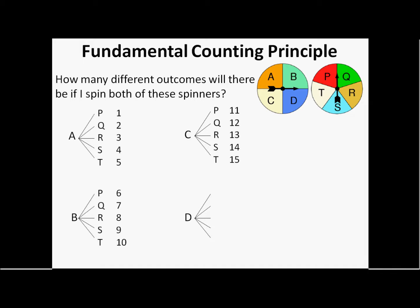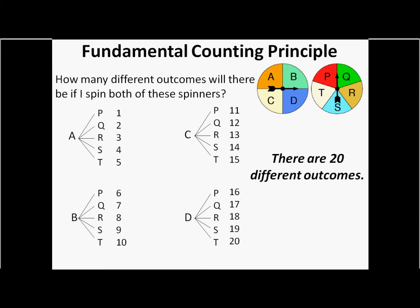And then finally with D, you also have five branches coming off, and then labeling it the different outcomes that could be on that second spinner. So there's 20 outcomes, 20 different outcomes that could occur.